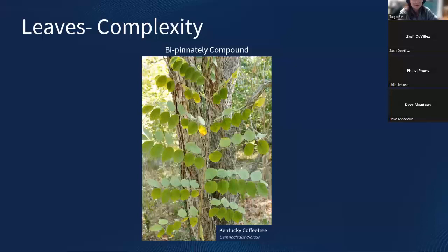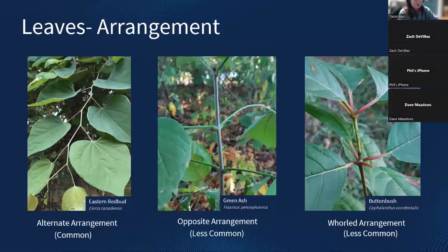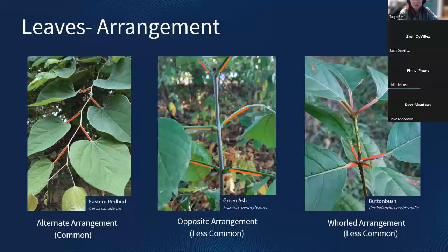You can also have bipinnately compound leaves, where there's a second branching on the leaf — this entire item is considered the leaf. You can even have tripinnately compound leaves, though there aren't many of those around here. We also look at arrangement — the arrangement of leaves on the stem. Alternate arrangement has leaves alternating down the stem, opposite arrangement has two leaves coming out directly across from each other, and whorled arrangement has three or more leaves at the same point. Alternate arrangement is the most common.